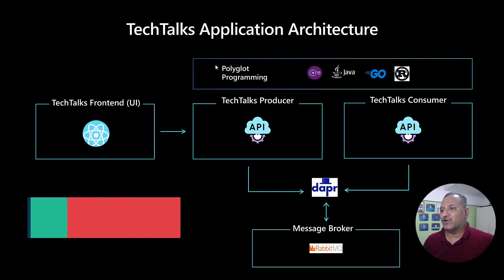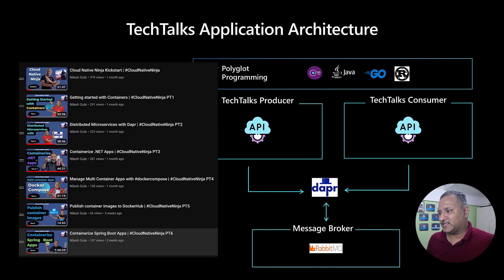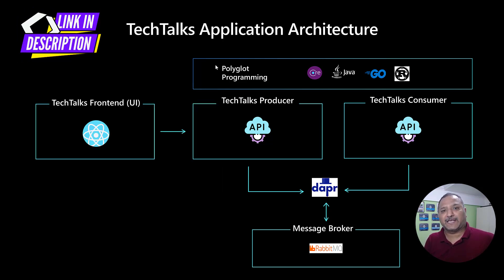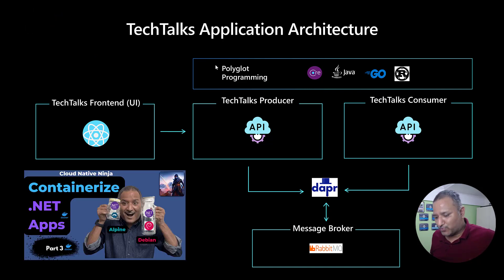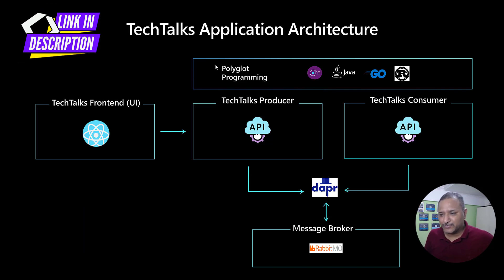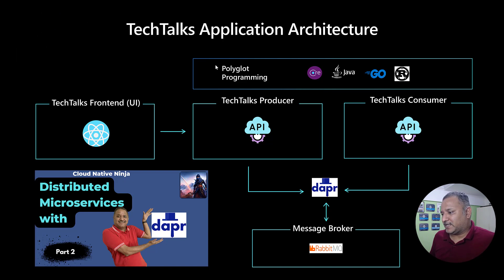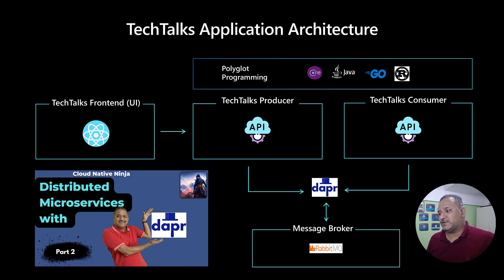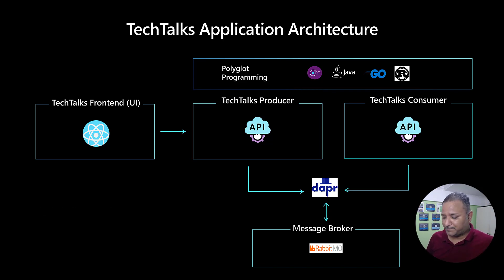So far in this series we have seen how to build a Tech Talks application with a producer and consumer using polyglot programming models or polyglot programming languages. We started off with .NET Core and we've also seen how to build containerized applications using Java. We are also using a distributed application runtime or DAPR which allows us to build modular applications and microservices, and this can be deployed in any environment. If you don't know what DAPR is, I did a video earlier in this series which talks about how to create a DAPRized application, how to integrate DAPR with our application, and we also use a message broker to decouple our producer and consumer APIs.